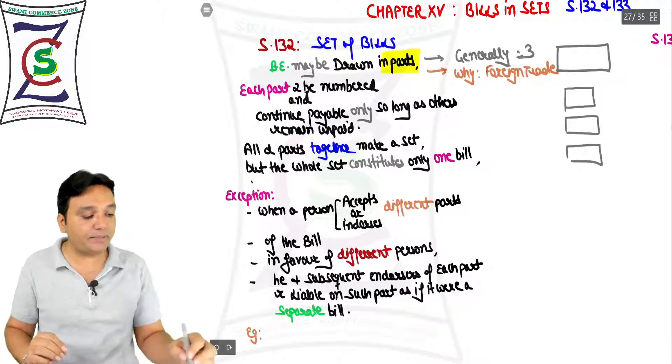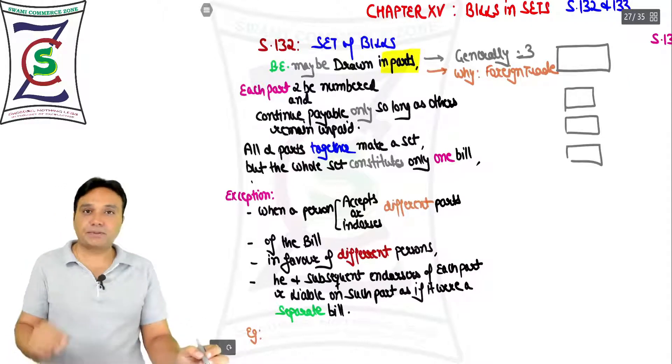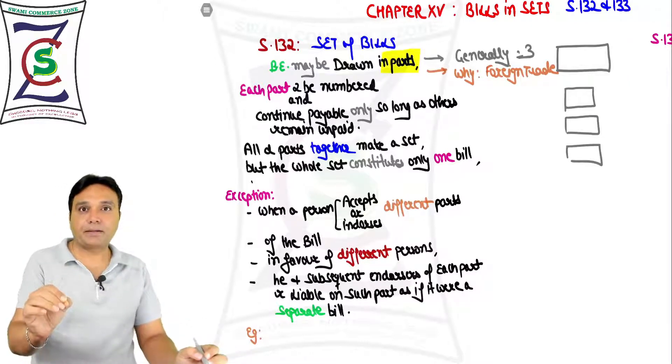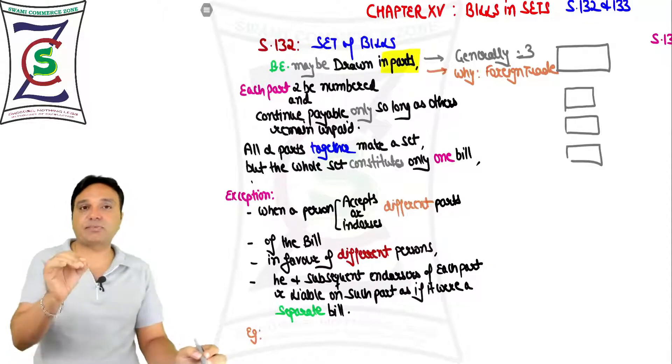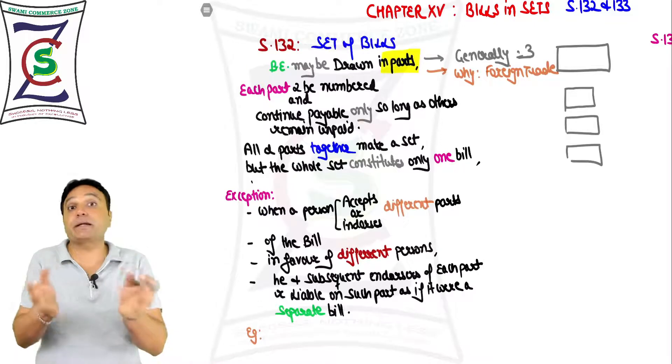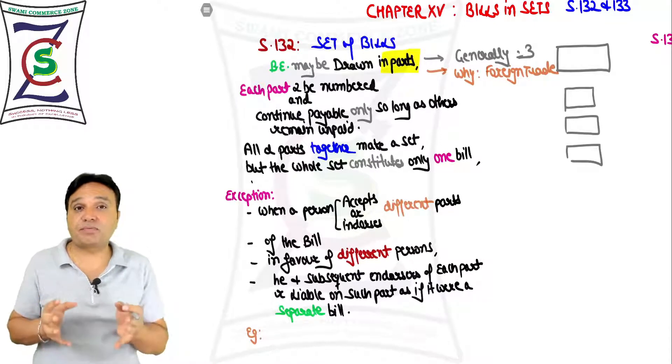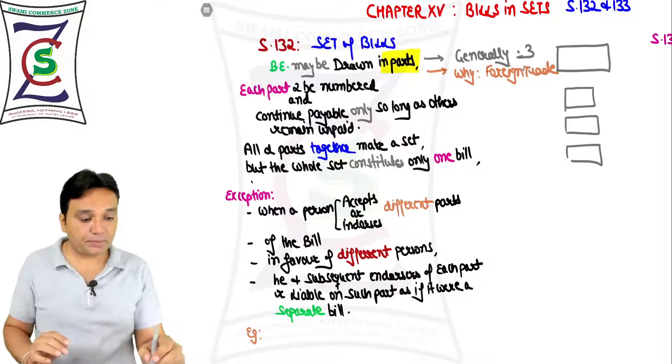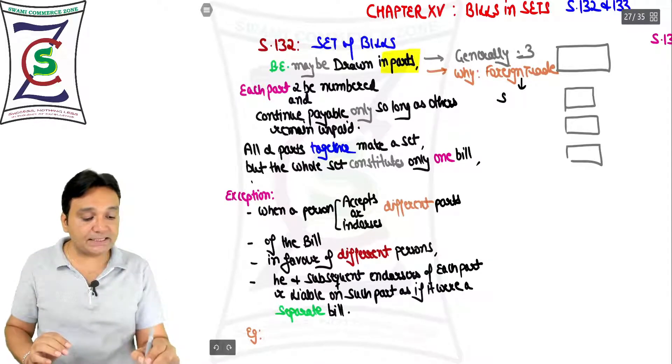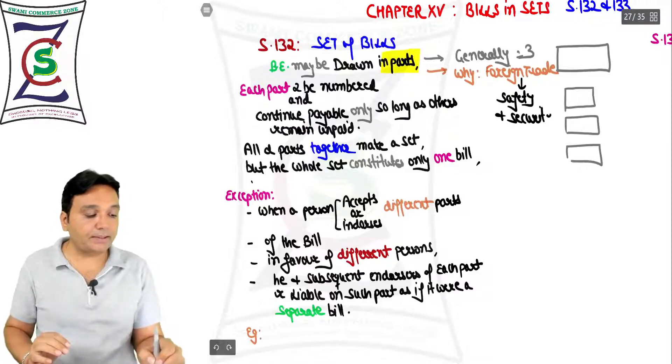The answer is this happens basically in case of foreign trade. This particular act is of year 1881. At that time, when business was done between countries, it was very risky because there were always pirates. The mode of transportation was ship - looting and all that.